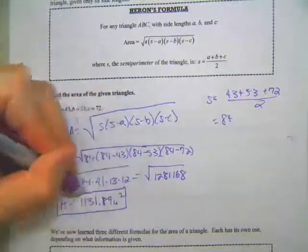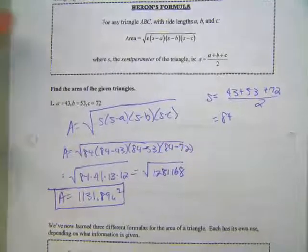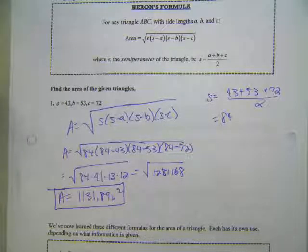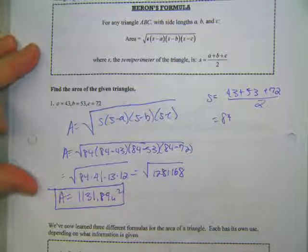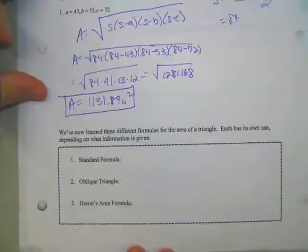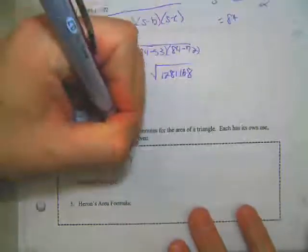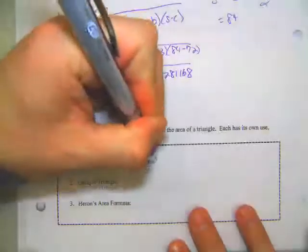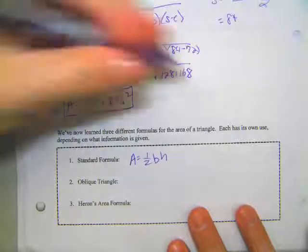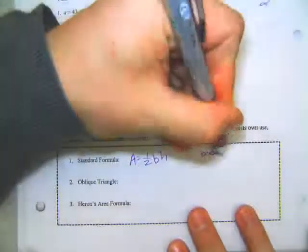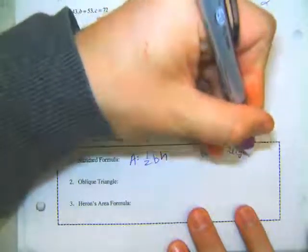So I don't even need to find any angles. If I have the three sides, I can use that formula to find the area. So like I said, we've now learned three different formulas to find the area of the triangle. Each has its own use depending on what information is given. So the standard formula is area equals 1 half times the base times the height. So I need the base and height to be able to do that one.